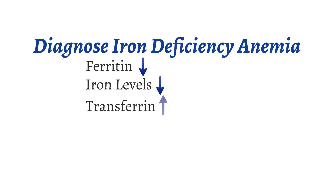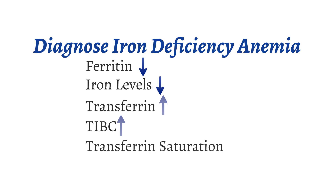Transferrin is a protein that allows for the transport of iron through the body. When the body is low on iron, transferrin will increase to aid the transport of iron. TIBC, or total iron binding capacity, measures how many available binding spots are available to bind iron for transport. In iron deficiency anemia, there should be a lot of spots available, making TIBC high. Transferrin saturation, otherwise known as iron saturation, is the ratio of serum iron to total iron binding capacity. Thus, if TIBC is high and serum iron is low, we would expect transferrin saturation to be low in iron deficiency anemia.